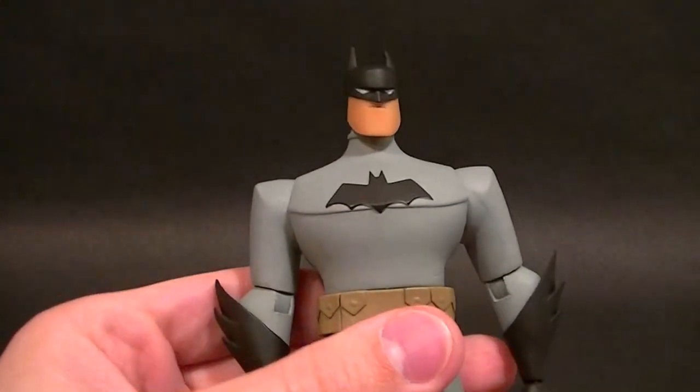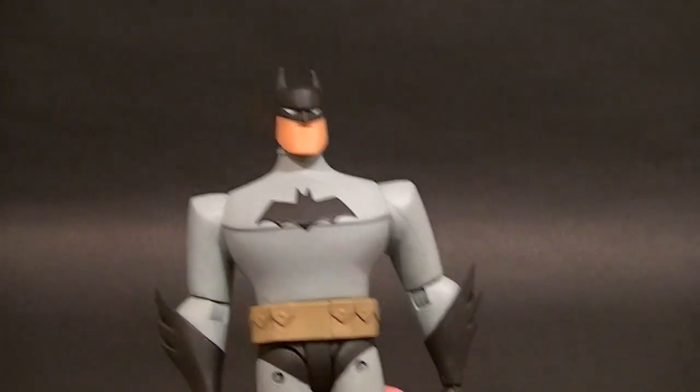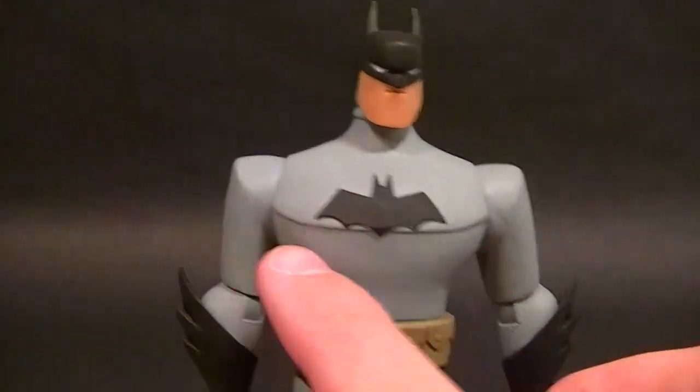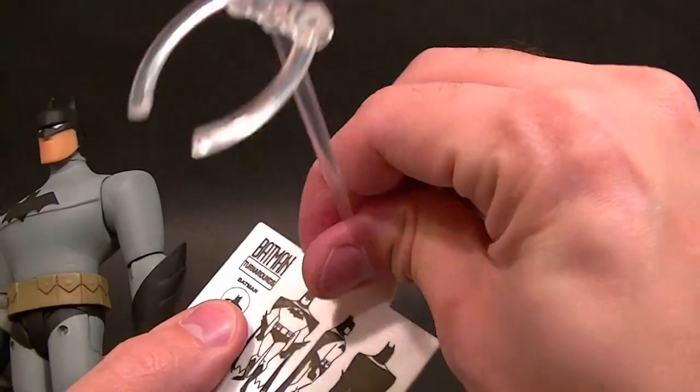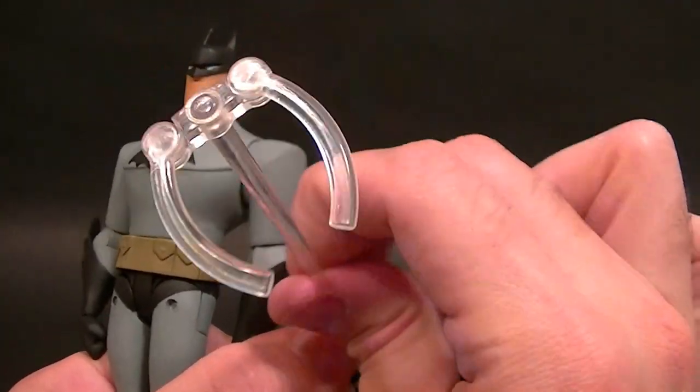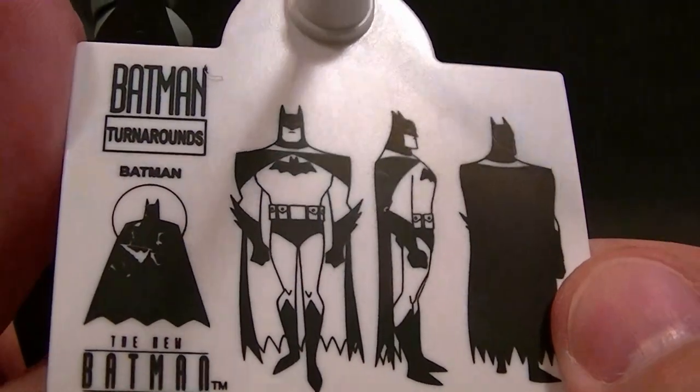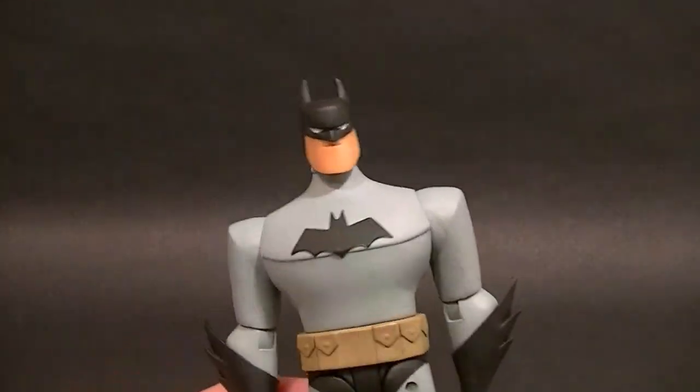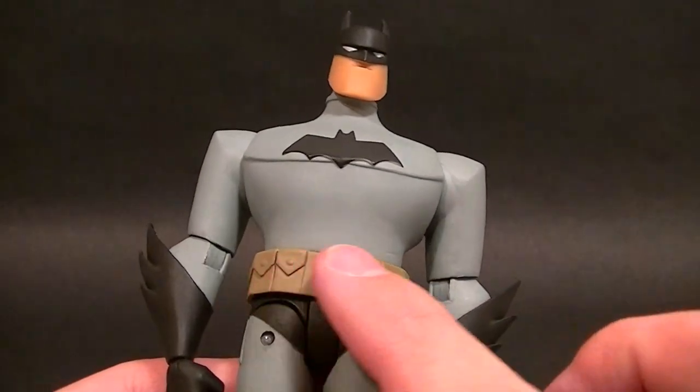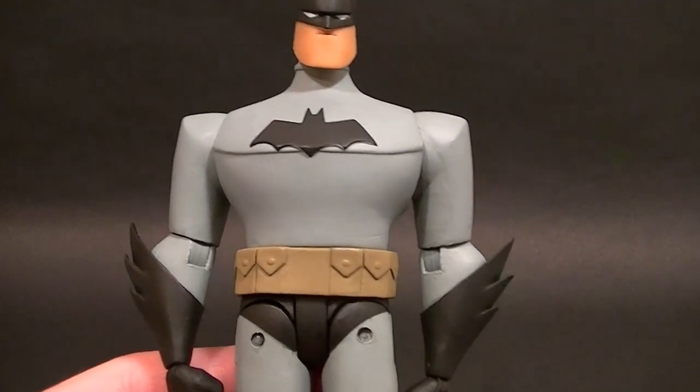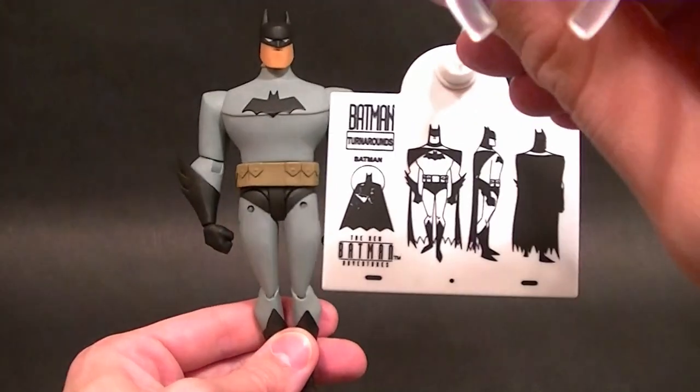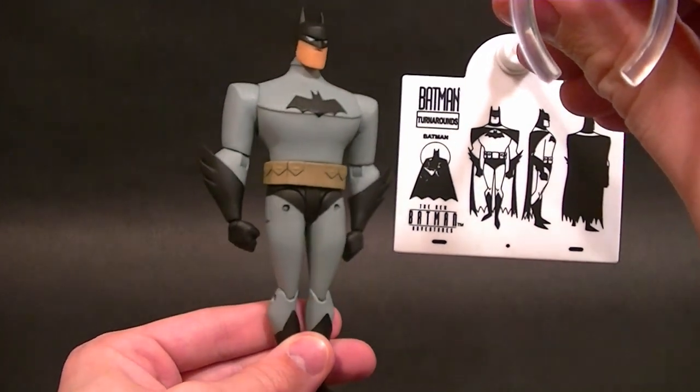So this is the figure. Sculpt-wise it's pretty good, it looks like it's supposed to from the show. I don't know how I feel about the pectoral sculpt, there's no line there for the pecs so it throws it off just a little bit but obviously it's not a big deal. The bat is sculpted so that's pretty good, the belt is sculpted, it looks pretty much accurate to the show, not perfect but pretty close. And then he has just about the right silhouette from the show, really no complaints as far as that goes.